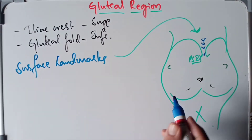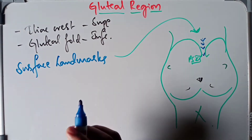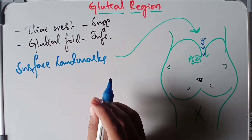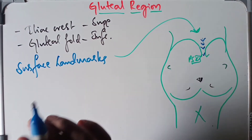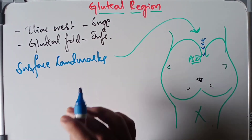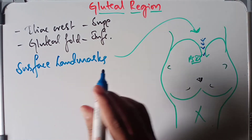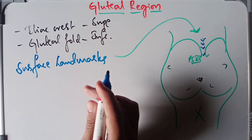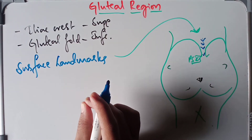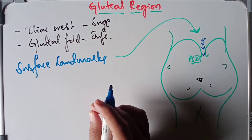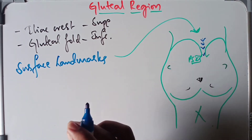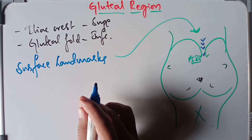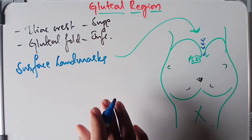The gluteal region contains one of the most powerful and bulkiest muscles in the body — the gluteus maximus. All structures which enter the gluteal region from the pelvis are covered by the gluteus maximus. It is also the chief extensor of the hip joint and plays a major role in maintaining the erect posture.